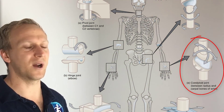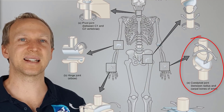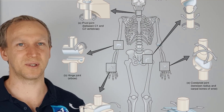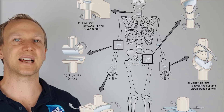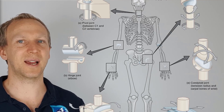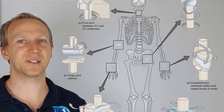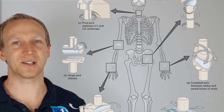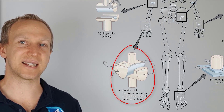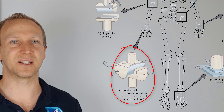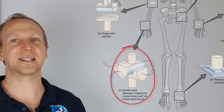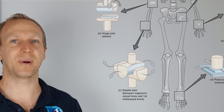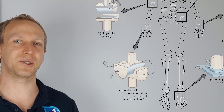Next, we have an ellipsoid or condyloid joint. An example is the joint between the radius and the carpal — your wrist. This allows movement in two planes, allowing for flexion, extension, abduction, adduction, and also circumduction. Then we have a saddle joint, which is the base of your thumb. This allows the same movements as the condyloid, but with no axial rotation.